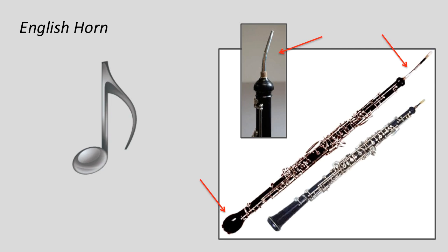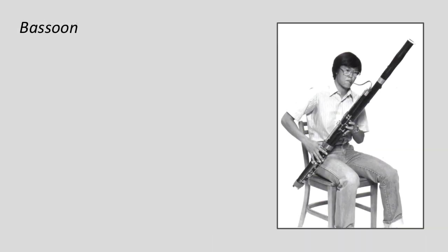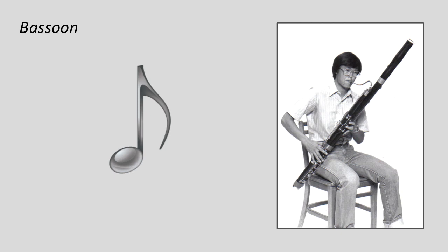The next largest double reed is the bassoon. It is much larger than the oboe and the English horn. In Peter and the Wolf, the bassoon represents the grandfather. Let's listen to it and see if that works. You can almost see the grandfather shaking his finger at Peter after he's disobeyed — it's definitely very appropriate. We could hear that the timbre of the bassoon has some of the edginess of the English horn, and that gives it a very unique sound in the orchestra.